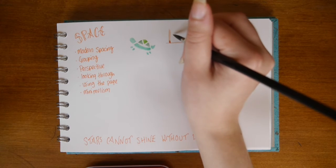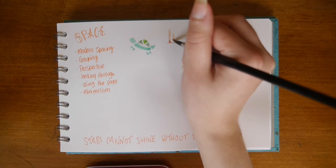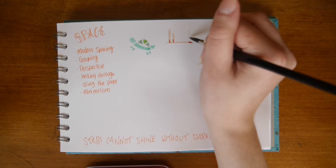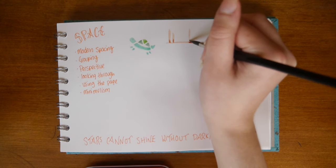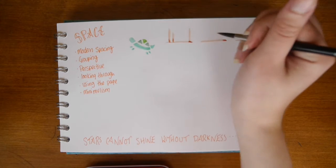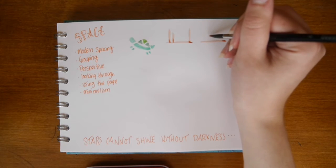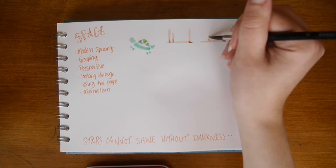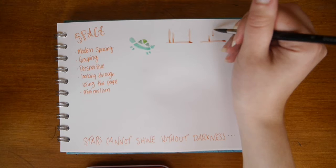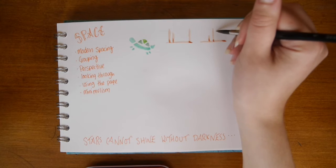Secondly I'm going to place three trees in the centre of the image. This is to give the impression that they are the main interest in the image, or the focal point of the image.